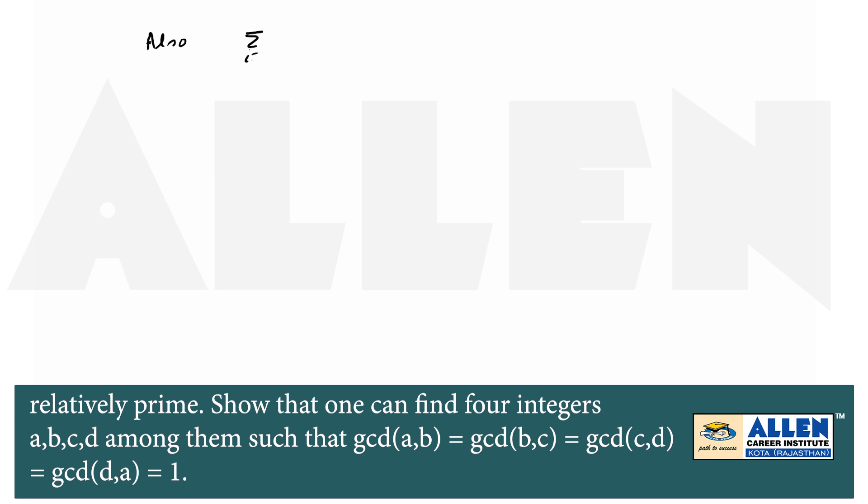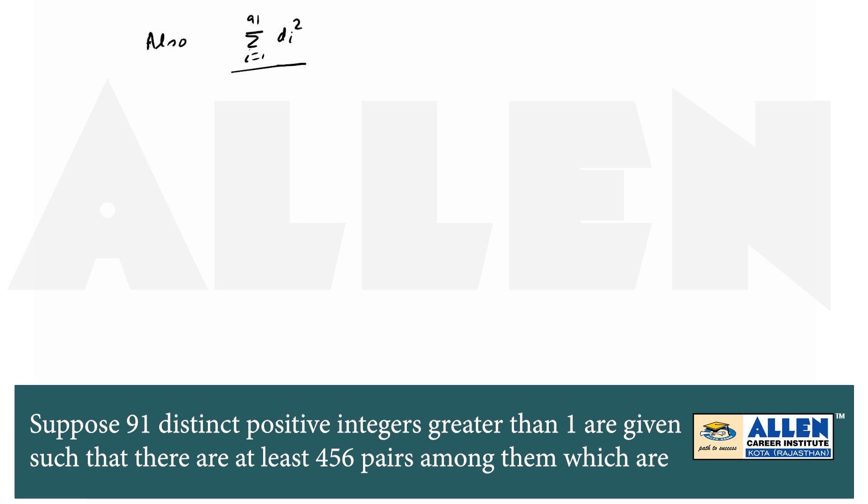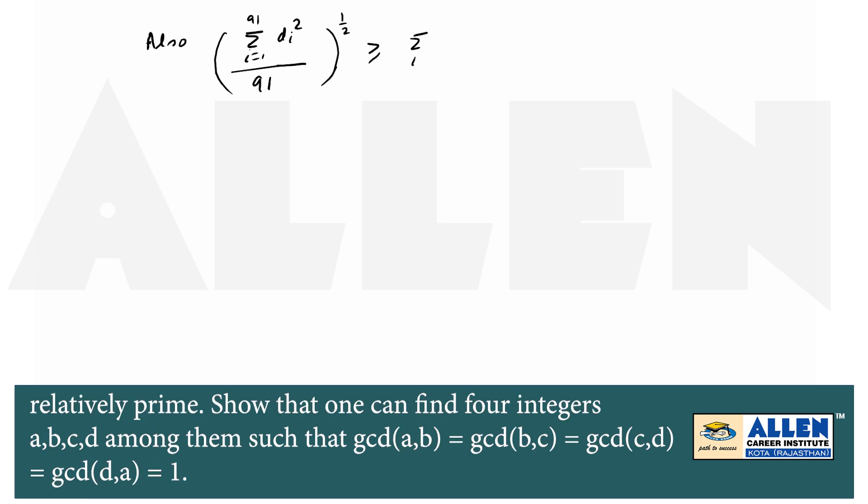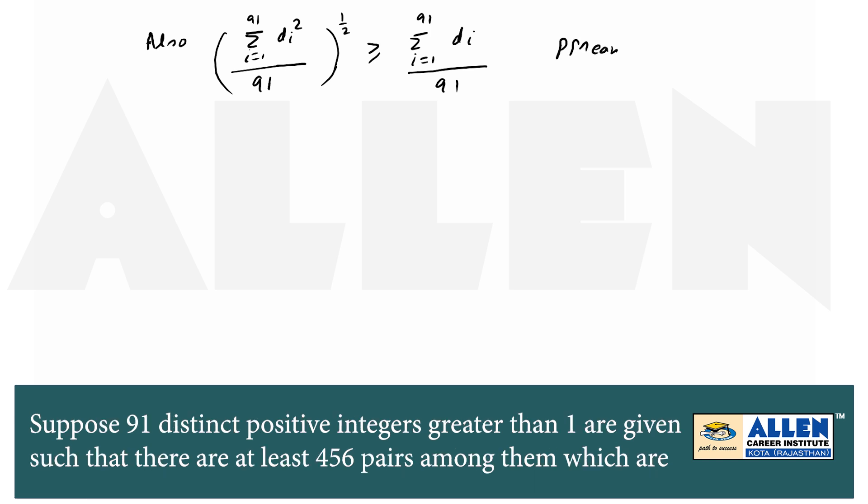Also, sigma i from 1 to 91 di square upon 91 whole power 1 by 2 is greater than equal to sigma i from 1 to 91 di upon 91 by power mean inequality.